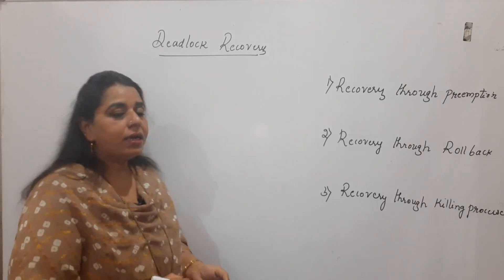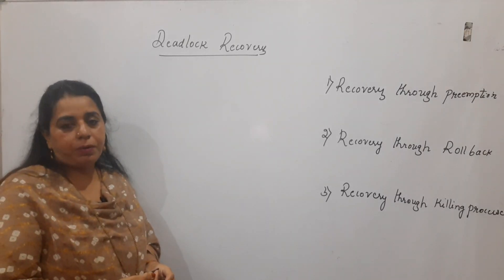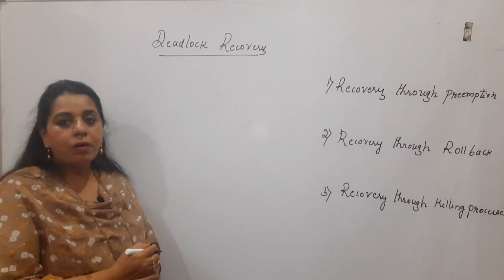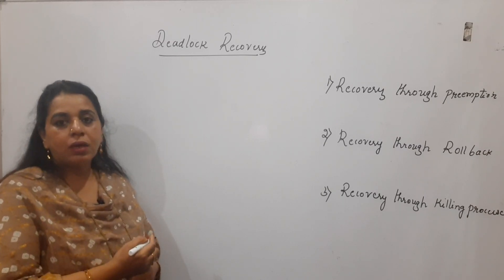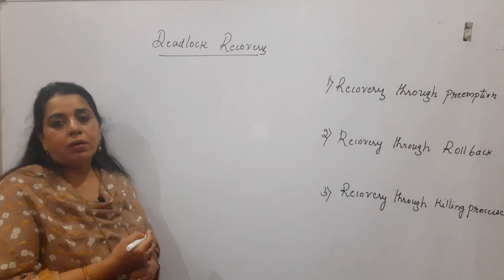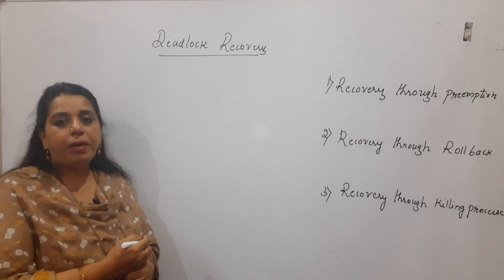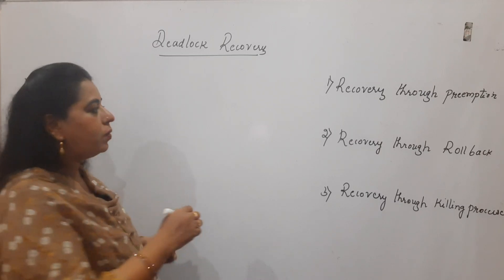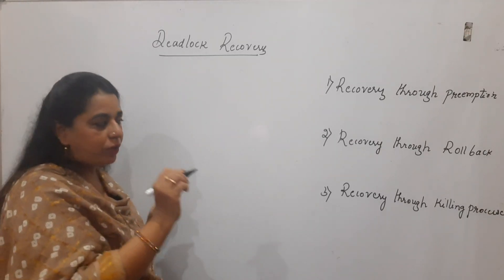The first method is recovery through preemption, or taking away the resource from the processes. Normally it is not allowed or not possible to take away an allocated resource from a process, but without a process getting noticed, the resources can be taken away. For this particular method, human intervention is required.